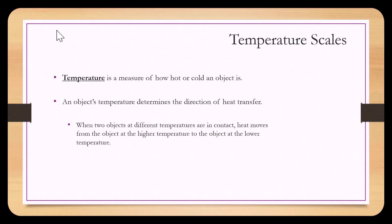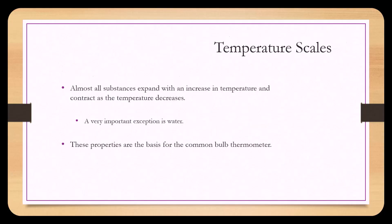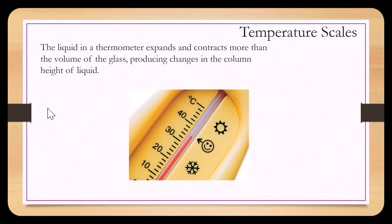Temperature is a measure of how hot or cold an object is. An object's temperature determines the direction of heat transfer. When two objects of different temperatures are in contact, heat moves from the object of higher temperature to the object of lower temperature. Almost all substances expand with an increase in temperature and contract as temperature decreases — a very important exception is water. These properties are the very basis for the common bulb thermometer.